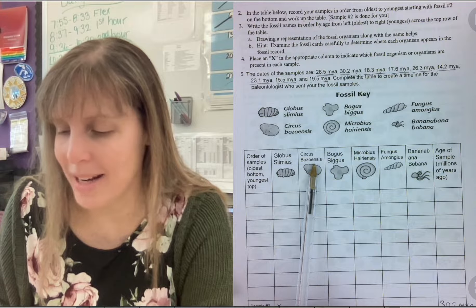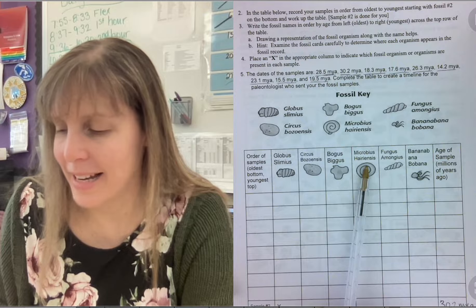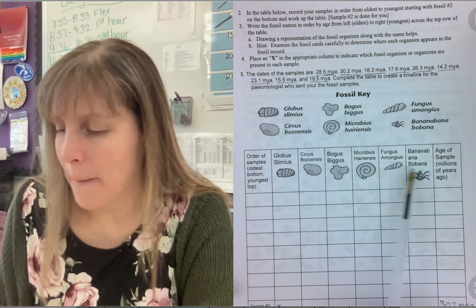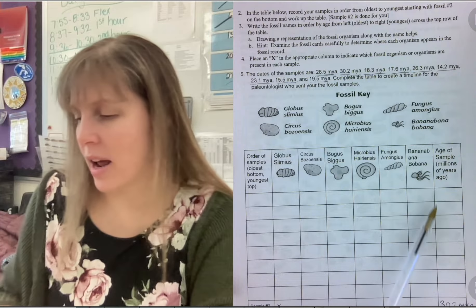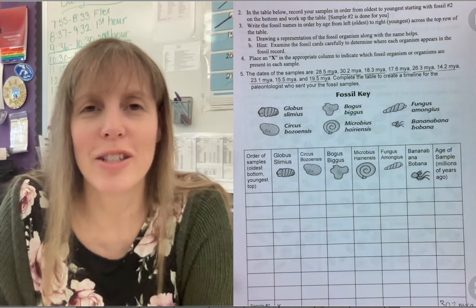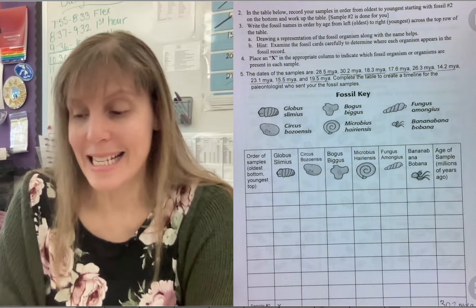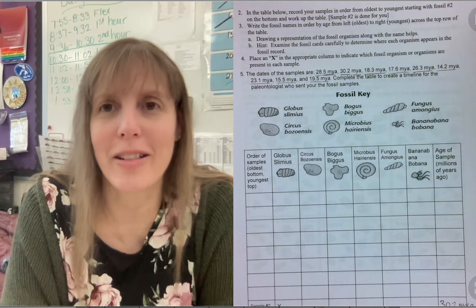We have Circus bozoanus, we have bogus bigus, microbius, herianusus, fungus amongus, banana bana, boana. And you're going to do the age of the sample and you're going to list the samples in order just to see if you can figure out how scientists relatively date different fossils that they find in different rock layers.